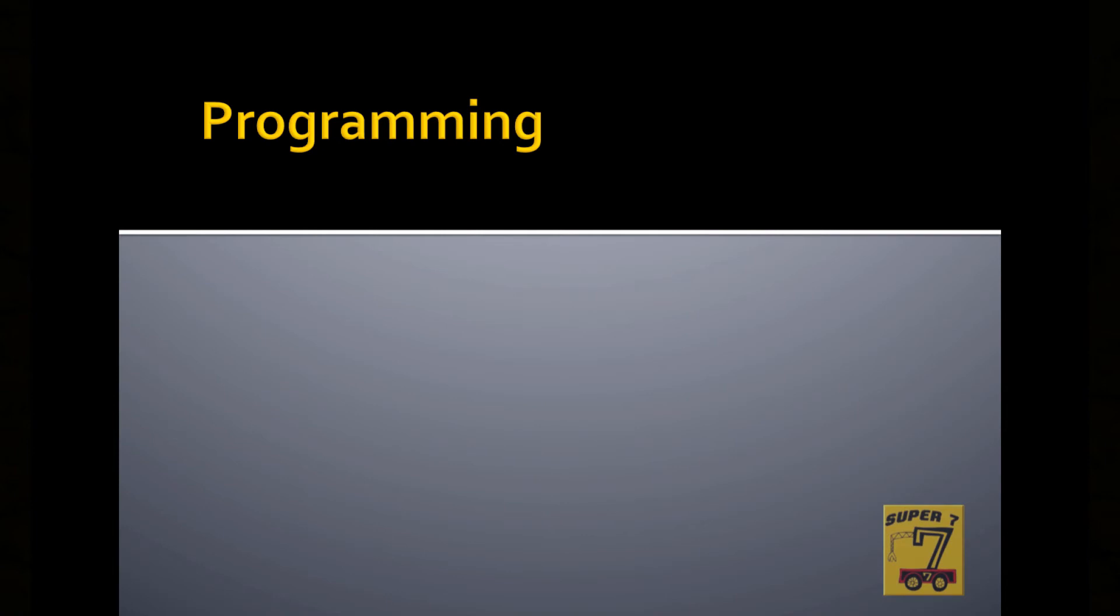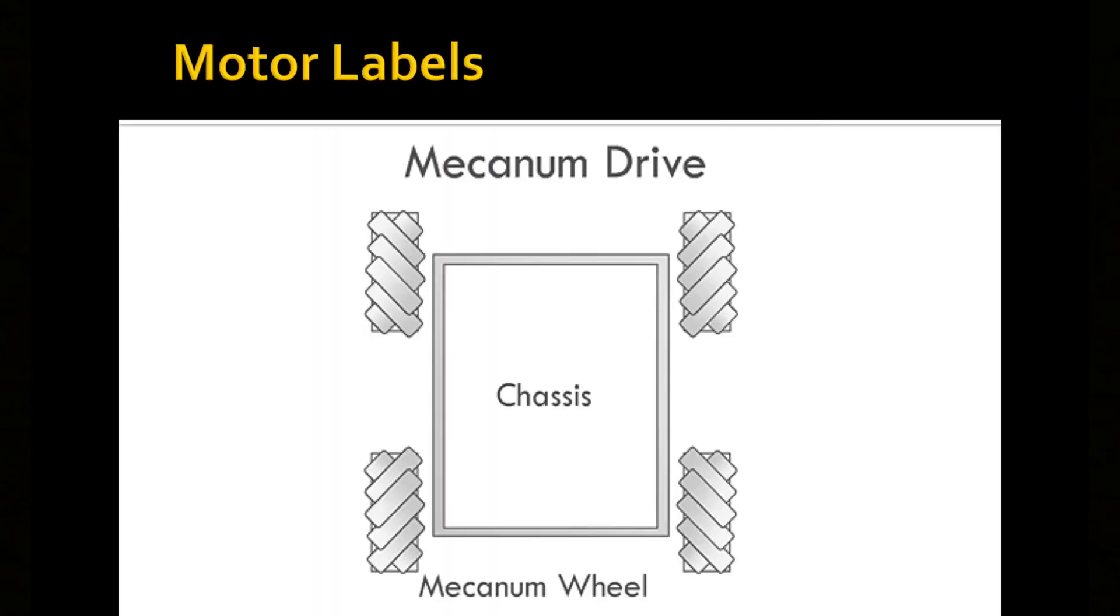When you're programming the robot, you first need to keep track of where the motors are, so we like to label them based off of location, in terms of top left and back right.